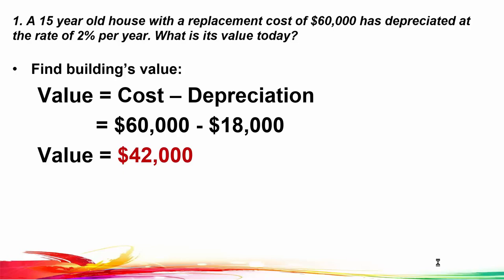Two points on this problem: first, the 2% per year is not compounded — simply multiply the percentage by the number of years. Second, there was no land information given. Typically we would be appraising a property with the land included, which the next problem will do.